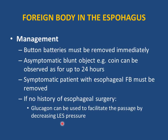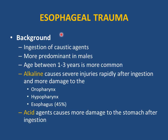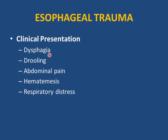Esophageal trauma from caustic agents (acid and alkaline) is most common in males aged one to three years. Alkaline causes obvious injuries in the mouth, lips, pharynx, and esophagus — injuries are visible on presentation. Acid may not show obvious oral injuries but can cause severe stomach injuries — history is critical. Clinical presentation includes dysphagia, drooling, abdominal pain, hematemesis, and respiratory distress from aspiration.